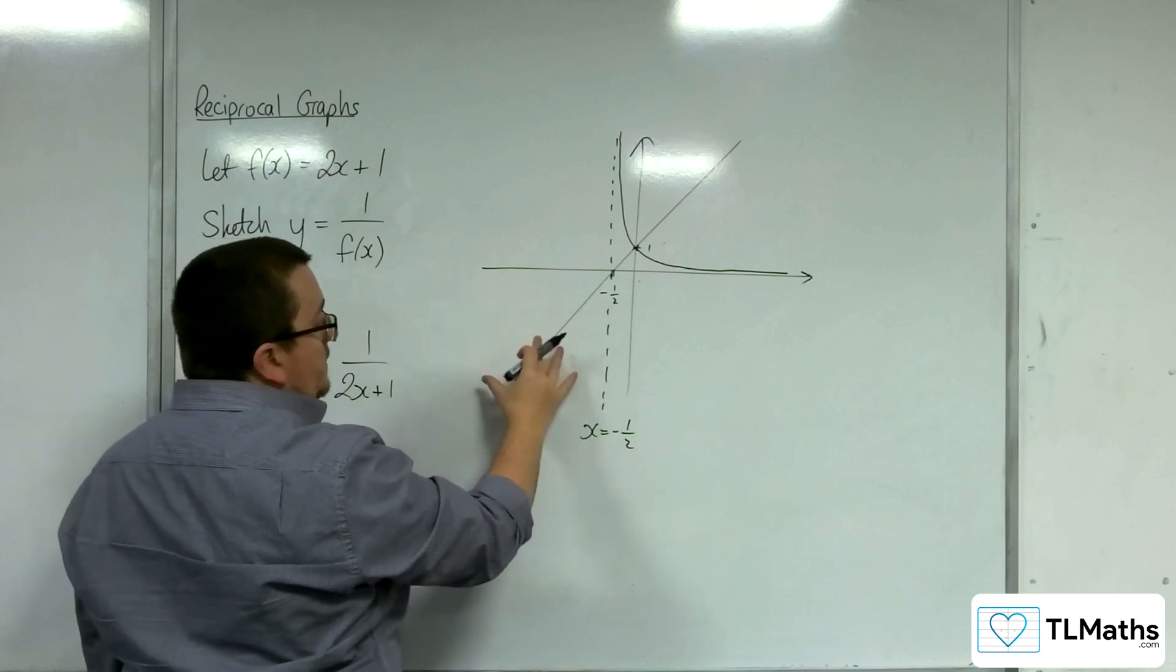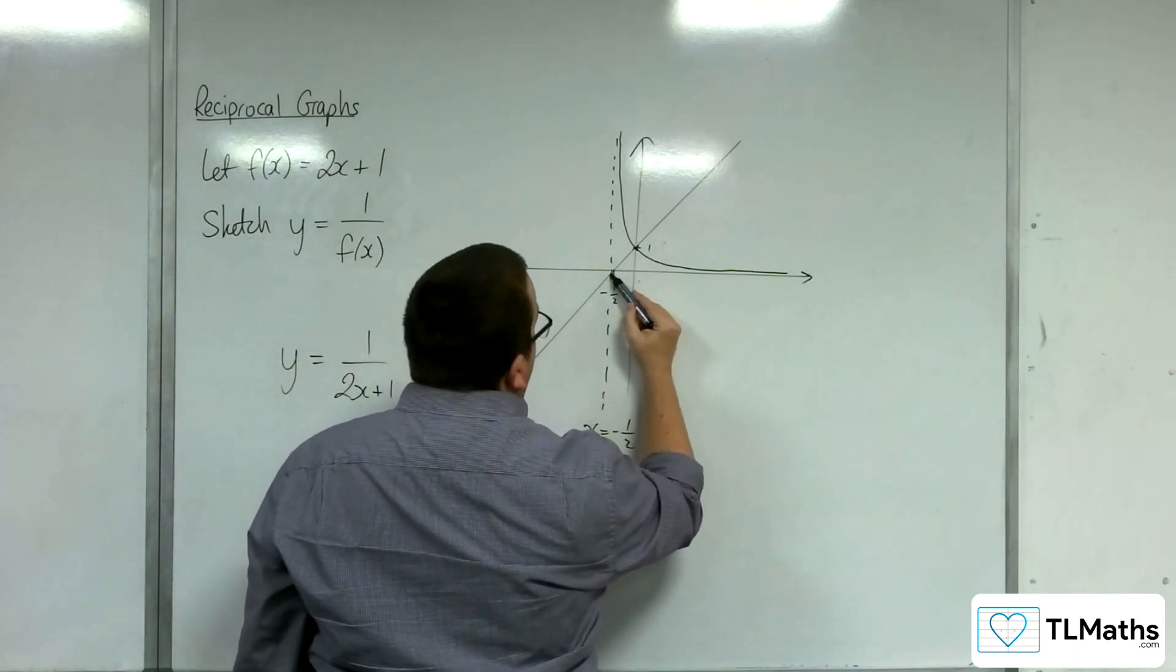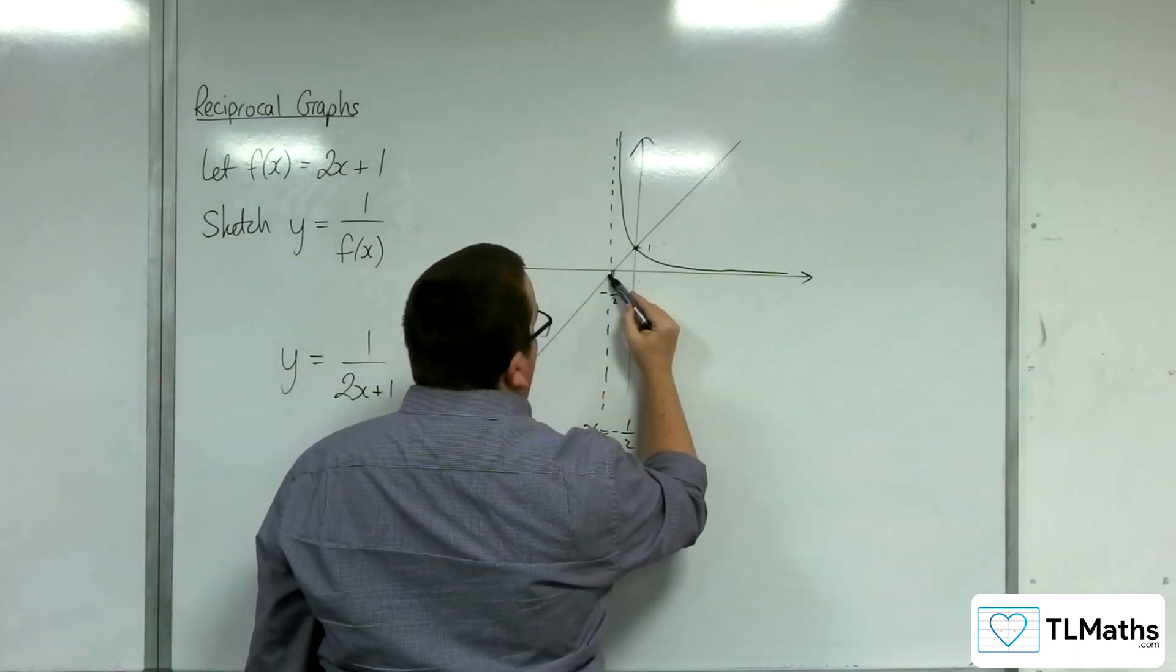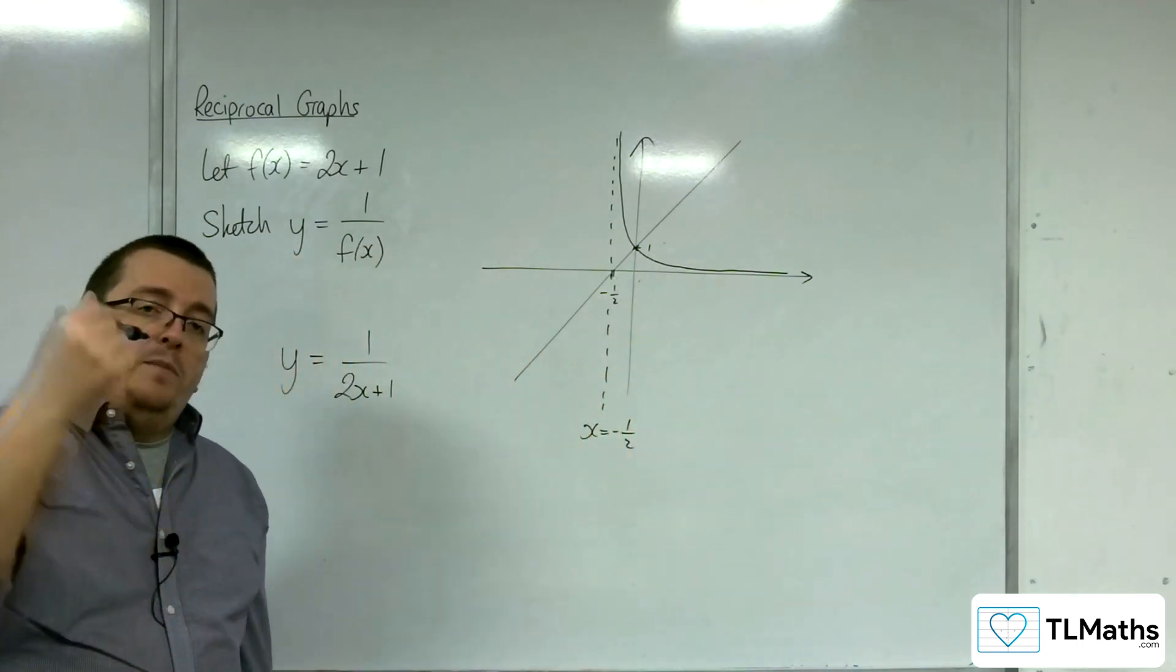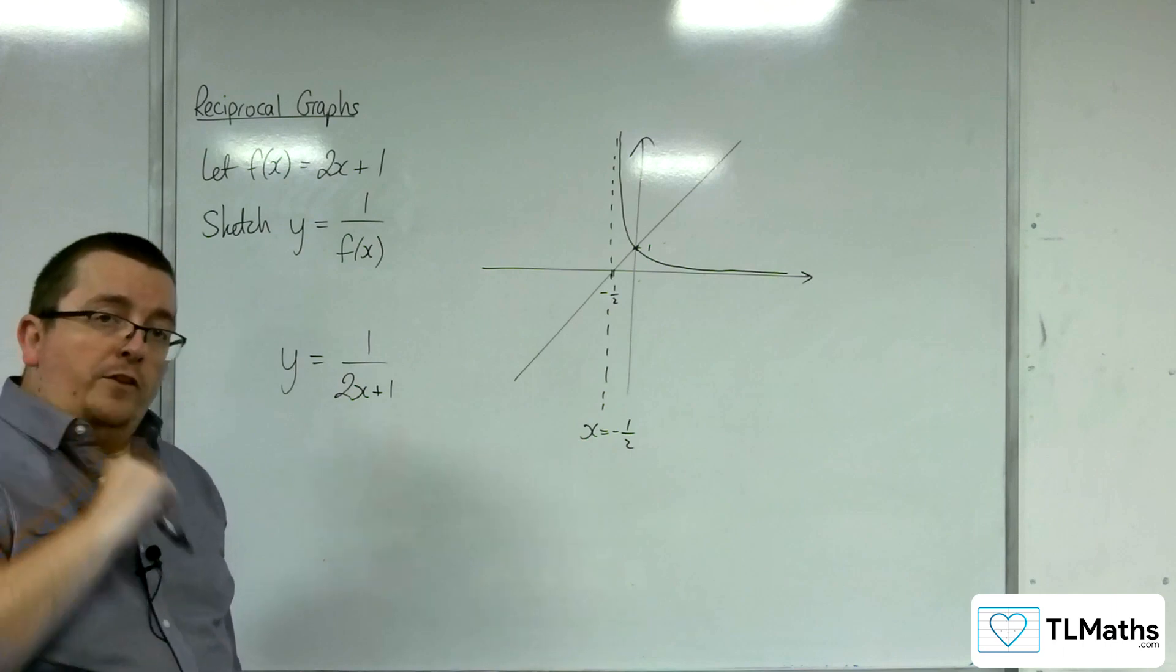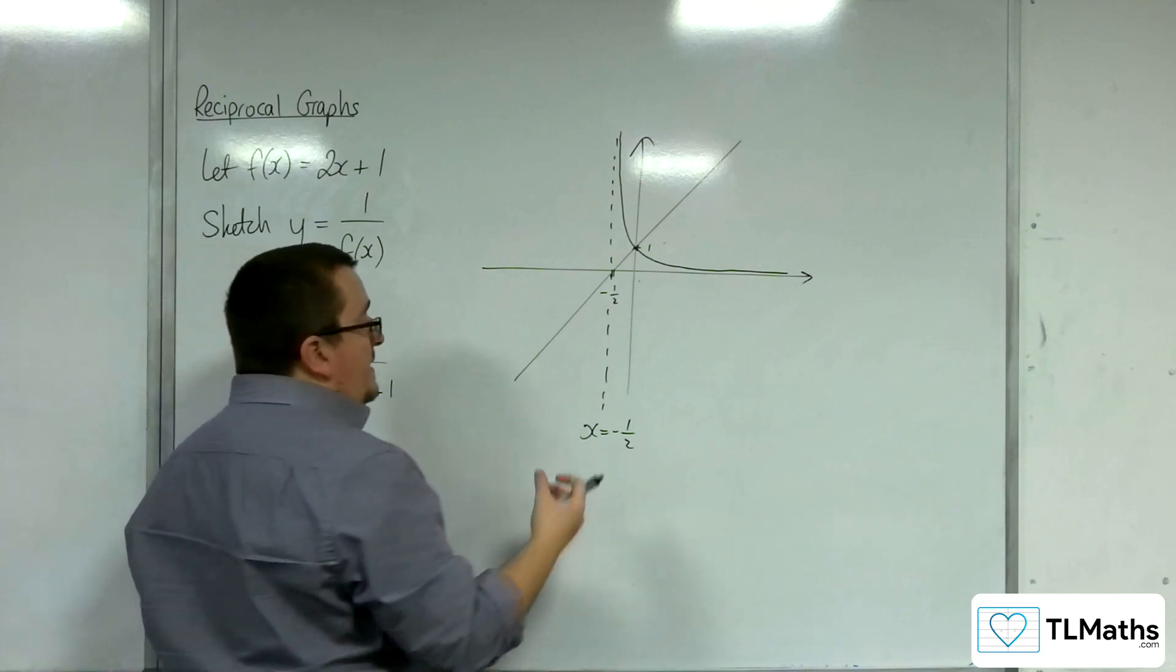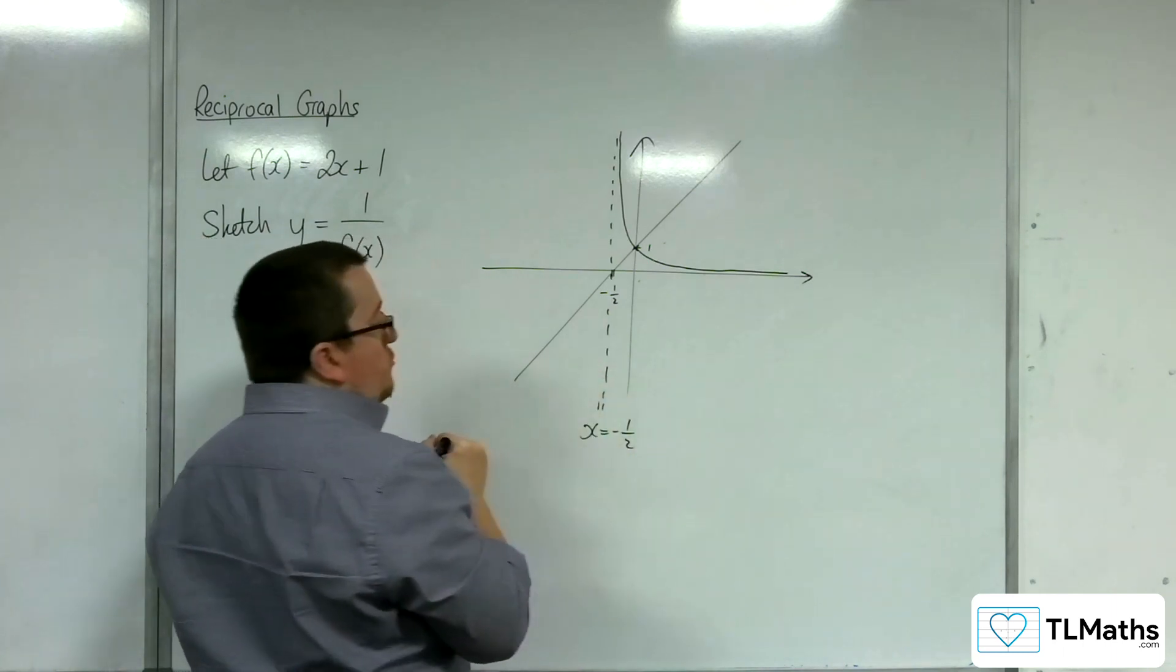Then, down here, when we're close to minus 1 half, but just to the left of it, we've got a small negative number. 1 divided by a small negative number, value that's close to 0, will be larger. But negative. So we know we're coming in from this direction.